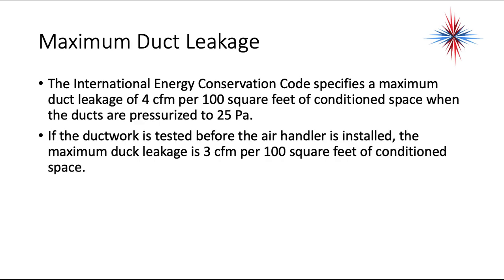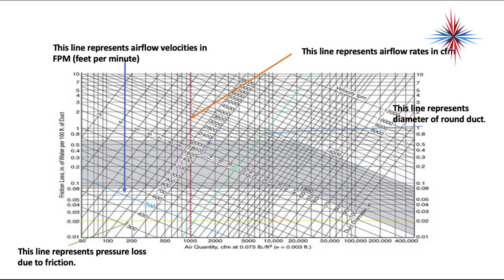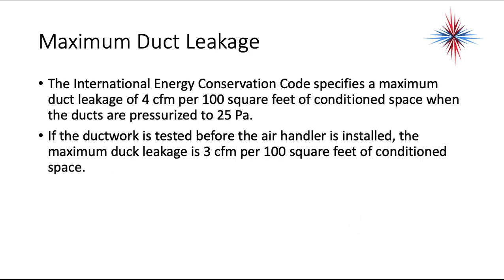We also need to discuss duct leakage. The International Energy Conservation Code specifies a maximum duct leakage of 4 CFM per 100 square feet of conditioned space when ducts are pressurized to 25 pascals. If ductwork is tested before the air handler is installed, the maximum is 3 CFM per 100 square feet. More and more, these tests are required to be performed by a third party. Learn to read the friction chart — there are many versions, including the ductulator wheel and electronic versions — and understand duct leakage requirements.